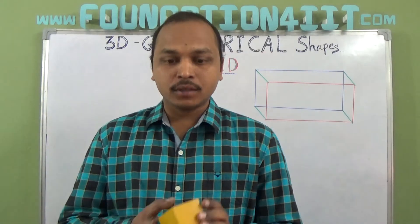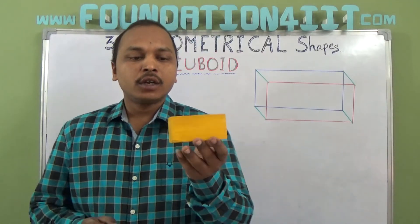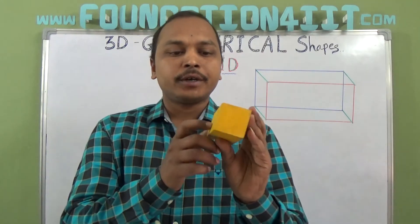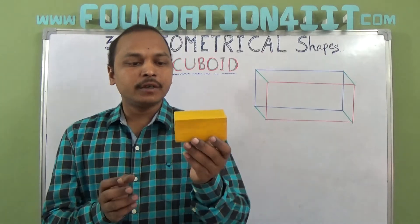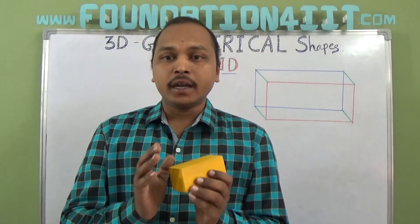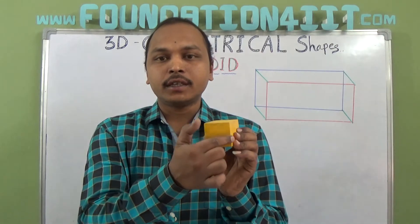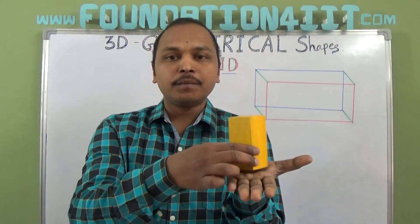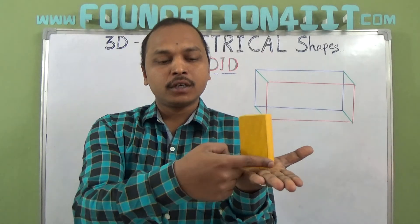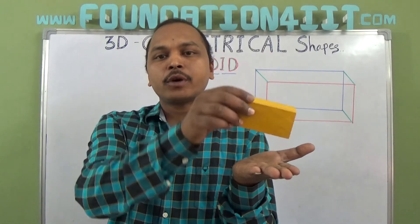Let's look at some diagrams of the cuboid shape. This is a wooden cuboid or rectangular prism. It has length, breadth, and height. This is the length, this is the breadth, and this is the height.